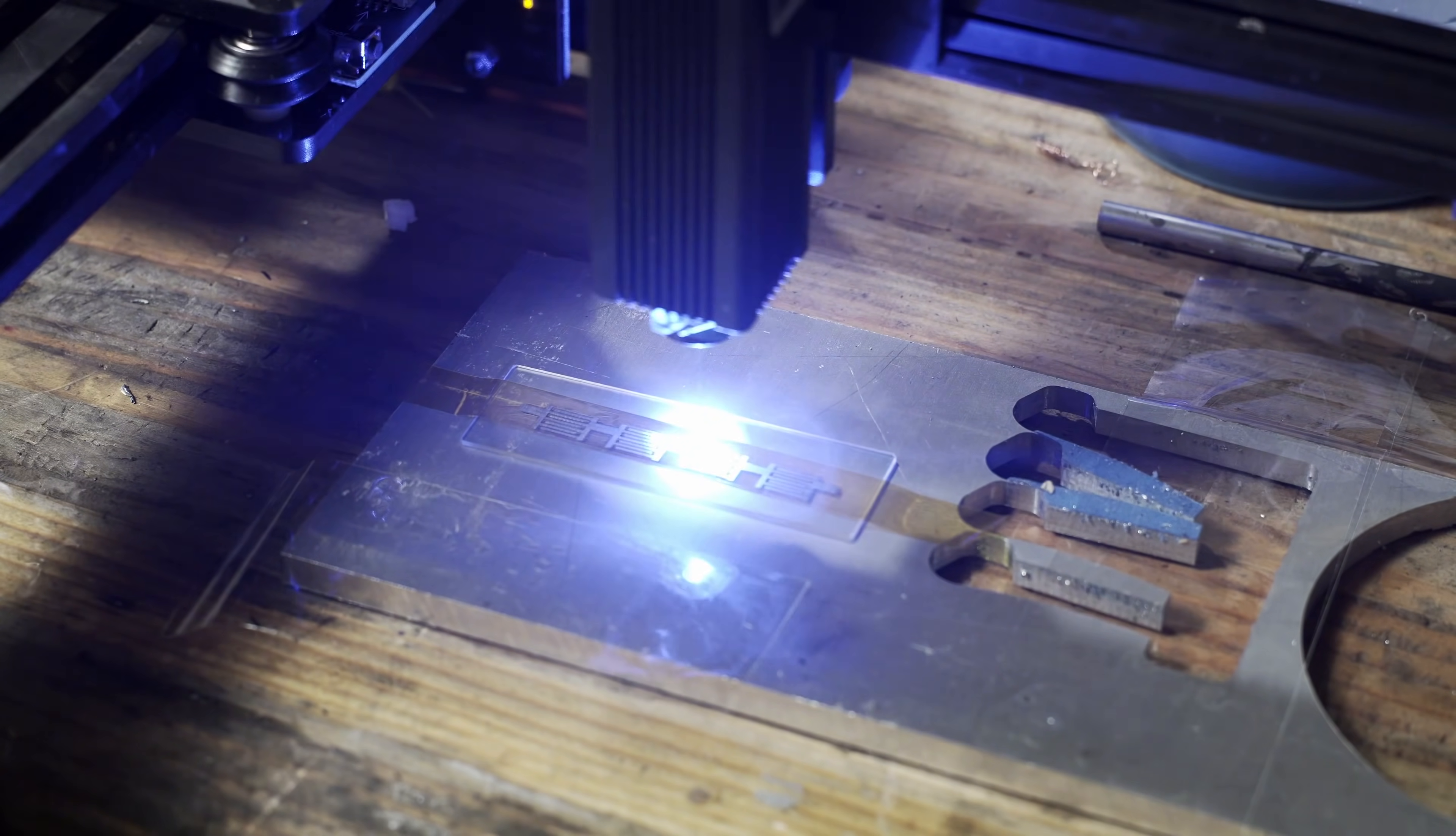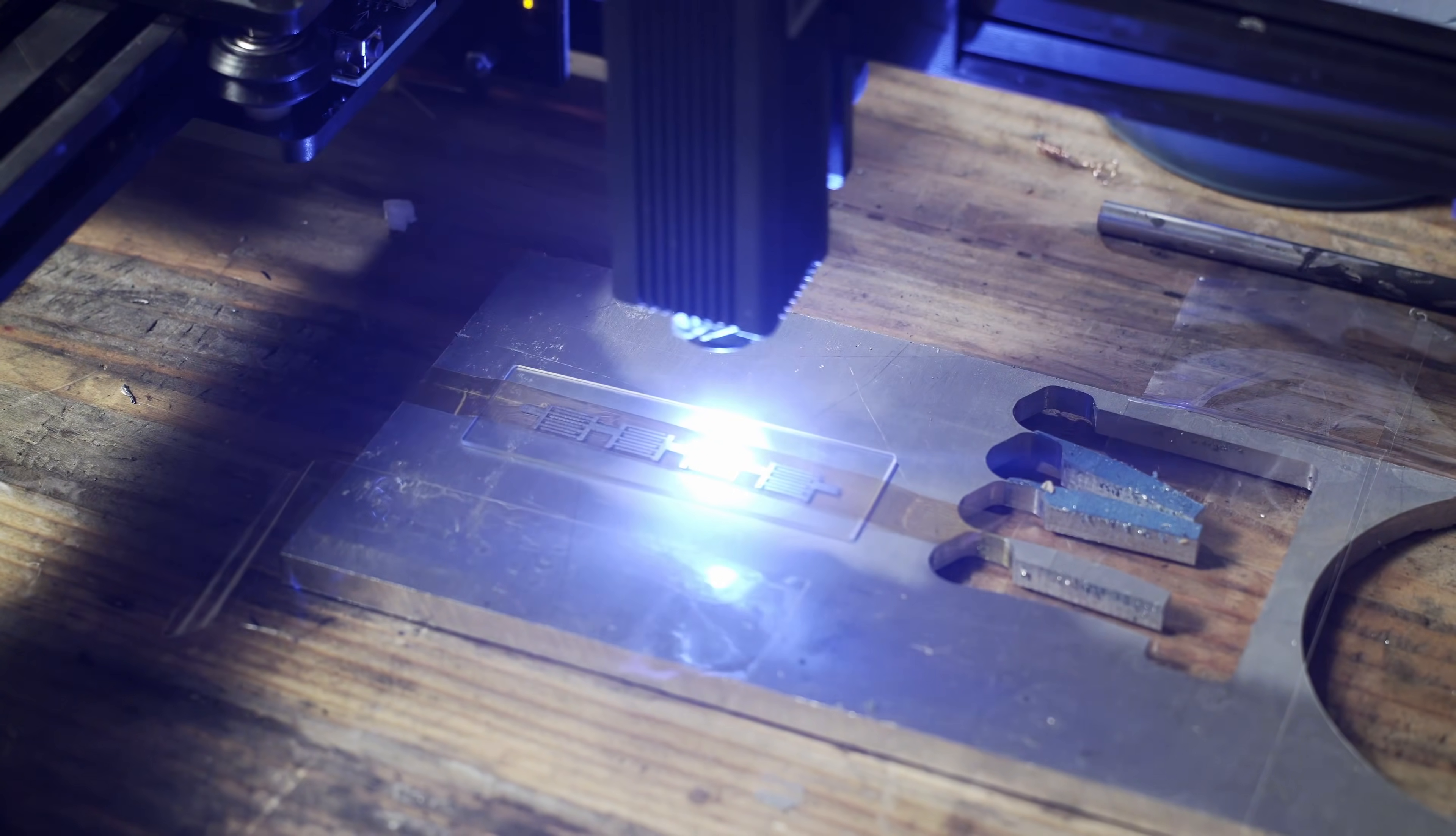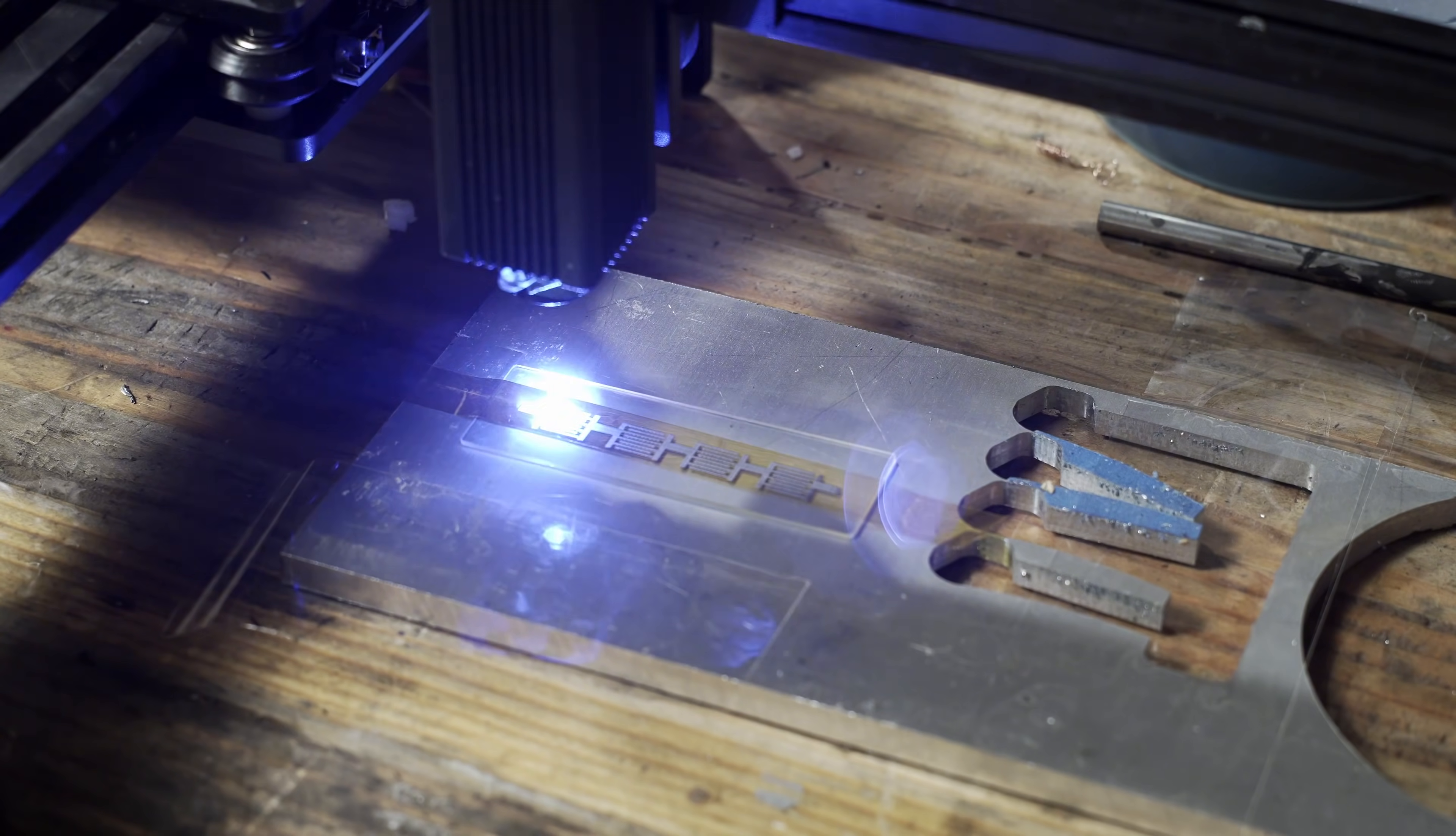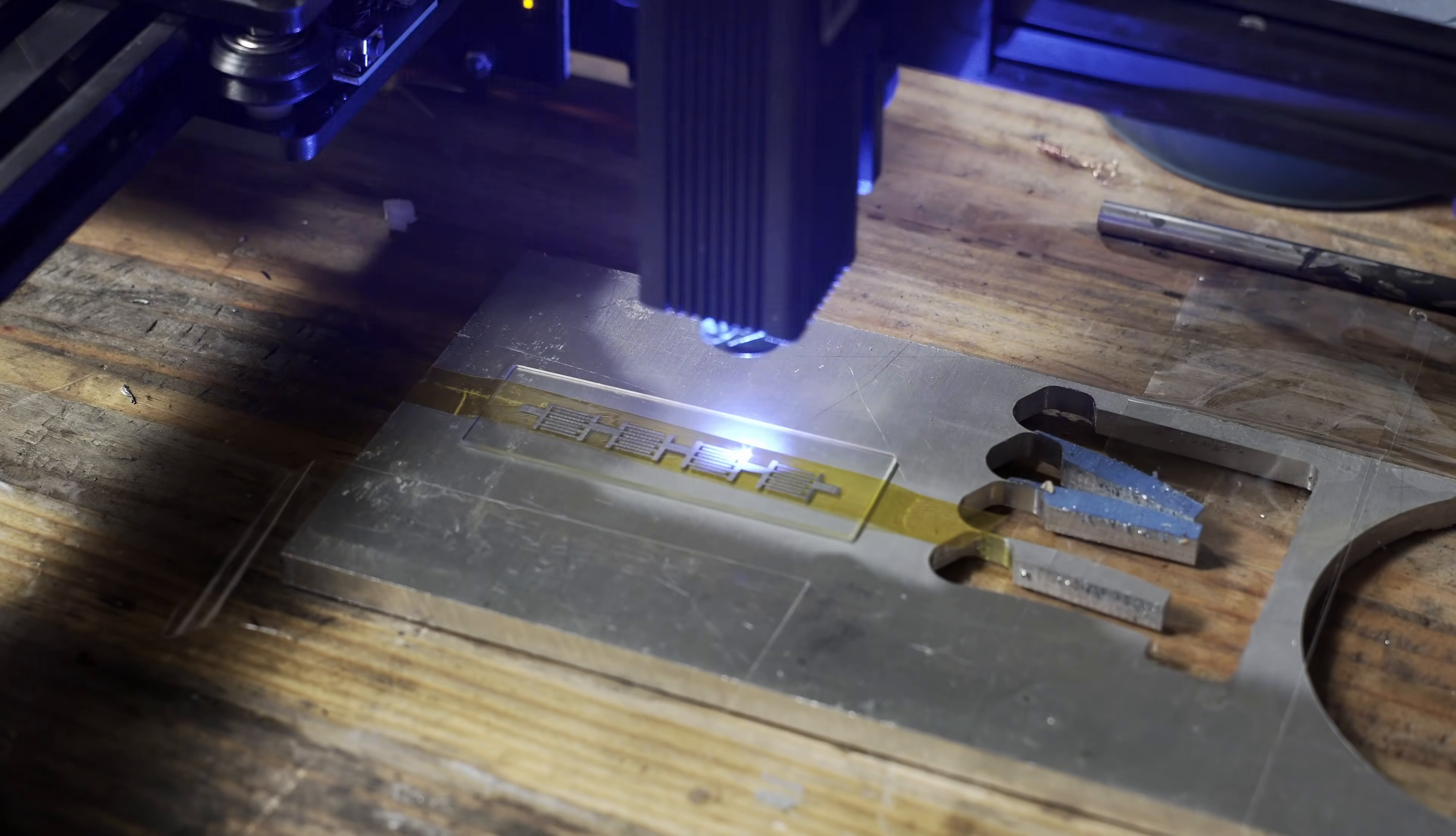That's not really how these interdigitated electrodes work, because it's almost a two-dimensional system rather than a 3D system. It really boils down more to the distance between the fingers in the electrode, and the total surface area or perimeter along the fingers, as well as the actual porosity of the electrodes themselves.